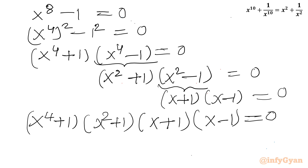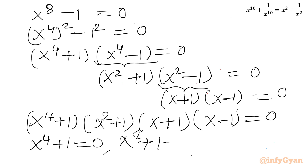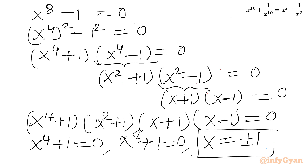So I can conclude: x^4 + 1 = 0, or x^2 + 1 = 0, or from the last two brackets x = ±1 directly. So two real solutions are confirmed: x = ±1.